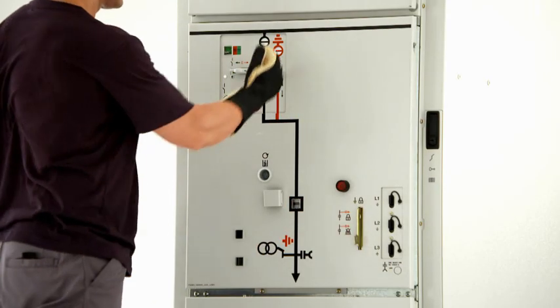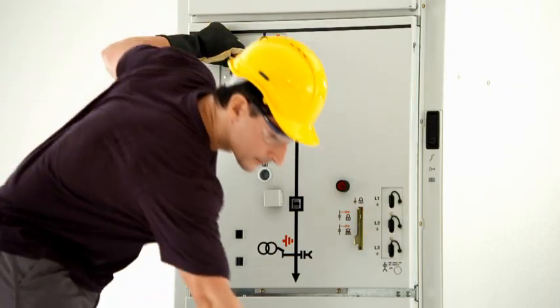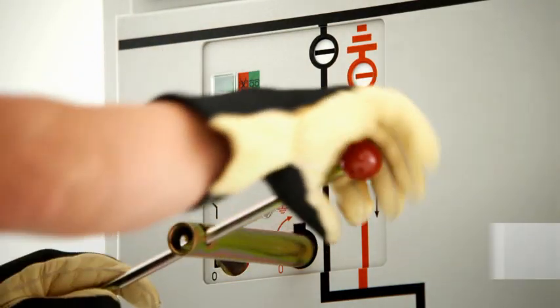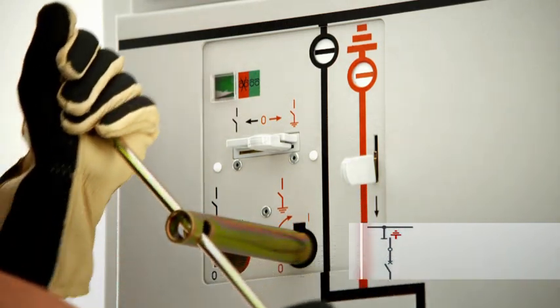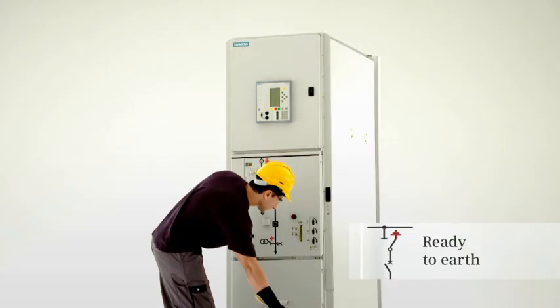The interrogation lever is now pushed down again and the control gate is pushed to the right to unlock the actuating opening for ready to earth. Turning the operating lever clockwise switches the three position disconnector to the ready to earth position.